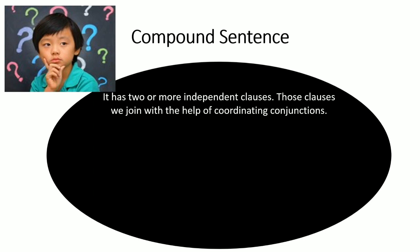Now what are conjunctions? I will share more in upcoming videos, but for now let's look at FANBOYS. F stands for 'for,' A stands for 'and,' N stands for 'nor,' B stands for 'but,' O stands for 'or,' Y stands for 'yet,' and S stands for 'so.' These are called coordinating conjunctions, which help in joining two sentences. Let's look at some examples.